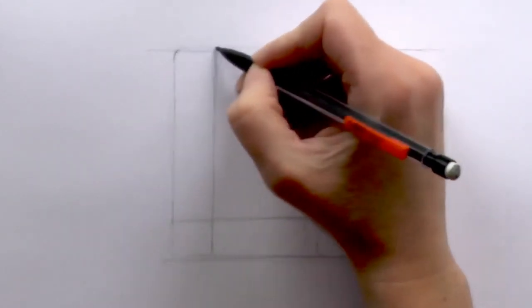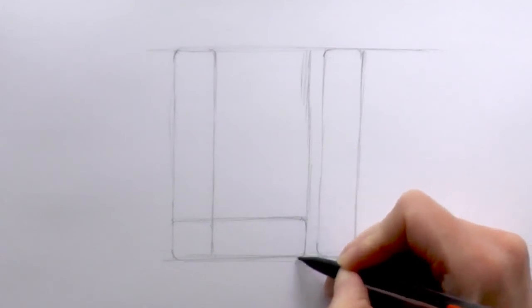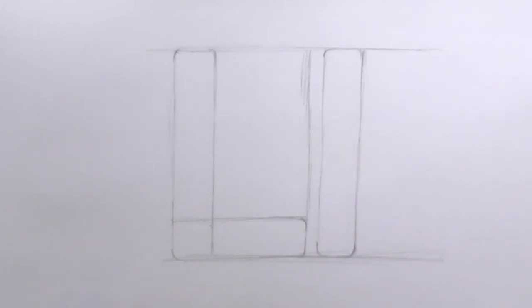Then we just curve off the corners just to make it look more cartoony. Cool, then we grab our black pens and just go back in and ink in the pencil lines.